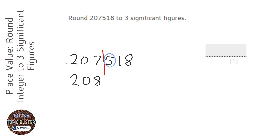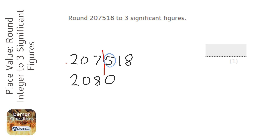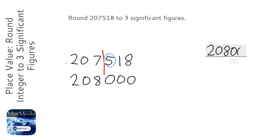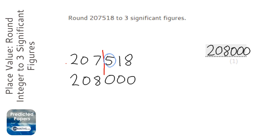Be careful here — the numbers to the right don't disappear. Some students, when they've done decimal places, think they just go away. With significant figures, you have to remember that they turn to zero. They do the same with decimal places; it's just because they're after the decimal point we don't need them anymore. But these zeros are what we call placeholders. For instance, if you're asked to estimate the size of a crowd and there were 207,518 people, you wouldn't say that was roughly 208 people — you would say that's roughly 208,000 people.